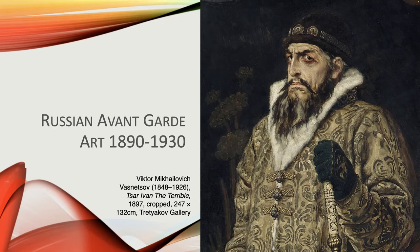The reign of the Tsars lasted for another three hundred and seventy years until Nicholas II abdicated in 1917. Incidentally, this picture of Ivan the Terrible wasn't painted at the period — we've only got a few ideas of what he looked like. It was painted during the period I'm talking about today, by Viktor Vasnetsov, and I'll talk more about him later.